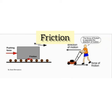When two things rub or touch each other, friction is developed. For example, a car moving on the road — the car and the road are touching each other, and a force of friction is developing. When friction is very less, things slide, and when it is more, things don't move. If there is no friction, we would not be able to walk and would keep slipping.